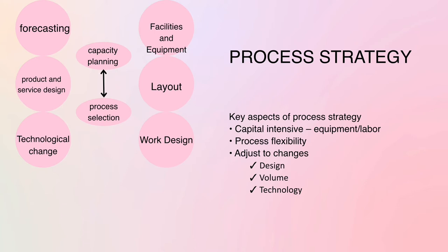In the chart, you can see capacity planning and process selection. Both are influenced by forecasting, product and services design, and technological change. Between capacity planning and process selection, there is continuous involvement — it's not that we do capacity planning separately and then go for process selection. There is information flowing between the two stages, and both affect facilities, equipment layout, and work designs.